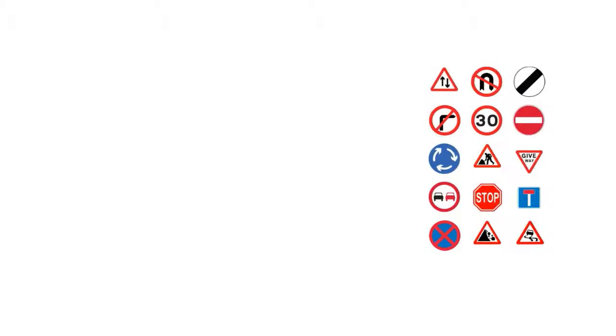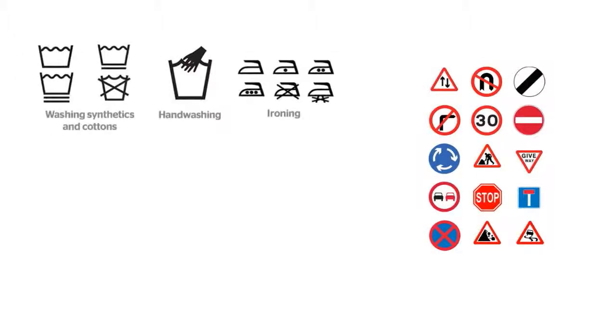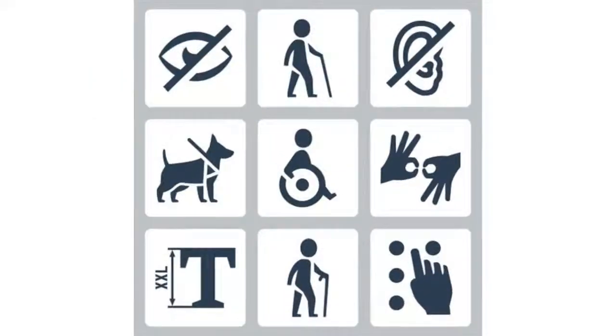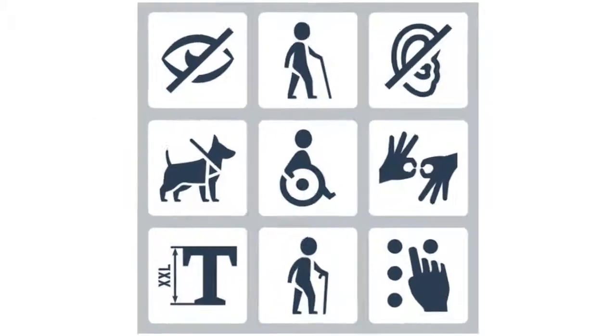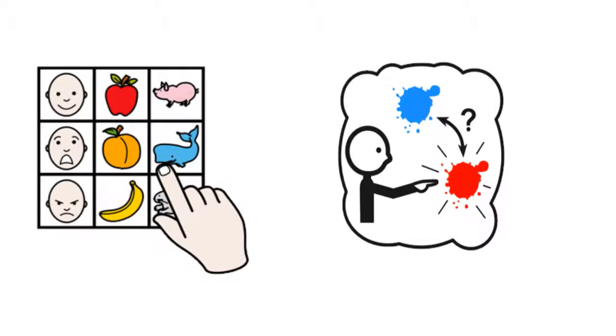Road signs, care symbols on clothing or direction symbols at an airport are examples of how symbols can convey information quickly and effectively. Symbols can be read, regardless of the person's language or literacy skills. And for people with communication difficulties, they can benefit from using symbols to understand what other people are saying, as well as to express what they want to say.